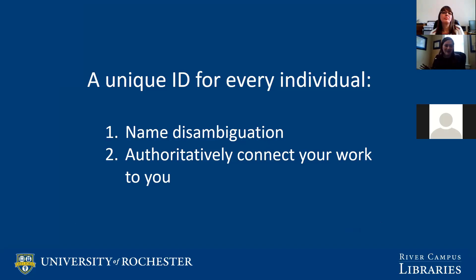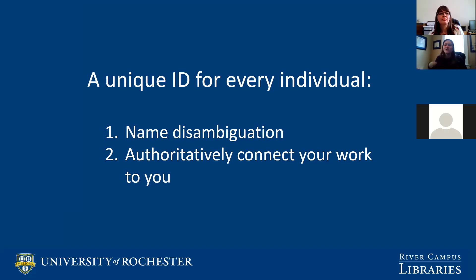Moving on to unique identifiers — how are our data points defined in these platforms? Unique IDs are a string of numbers or characters assigned to you as an individual. This helps for two reasons: first, named disambiguation. If you change your name, or if you have a common name, these identifiers are great because they move through the cycle with you. These identifiers are also an opportunity for you to claim authority and get credit for your work.